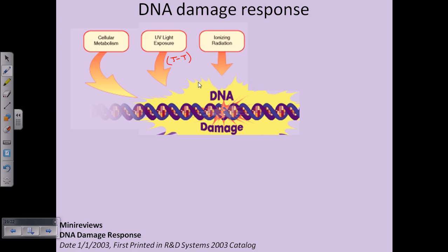DNA damage can also be caused by ionizing radiation — like X-ray radiation or gamma radiation. We live in a world full of pollution, and various ionizing radiations are present in the environment. Chemical exposure, chemical carcinogens, and chemical mutagens can also change the DNA.